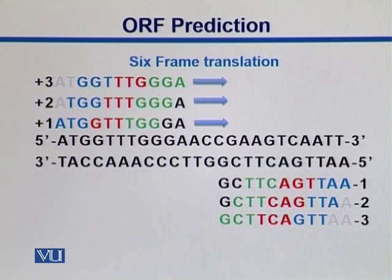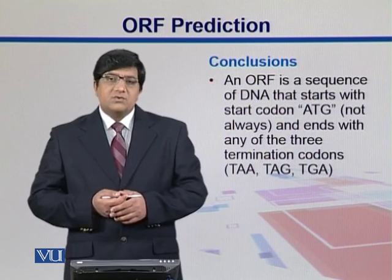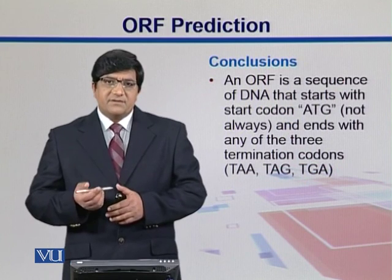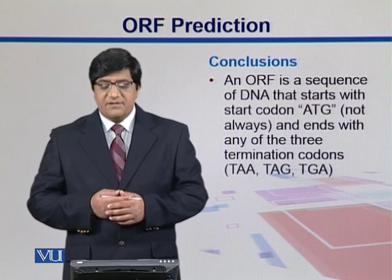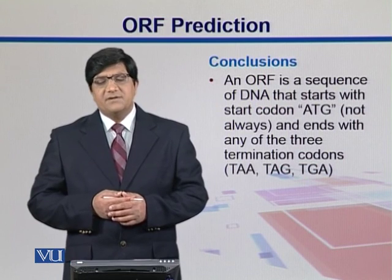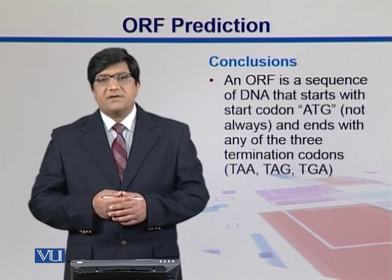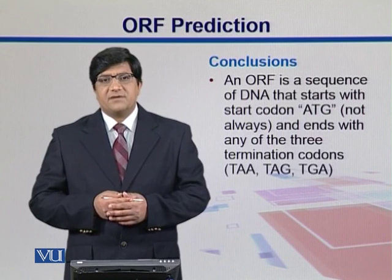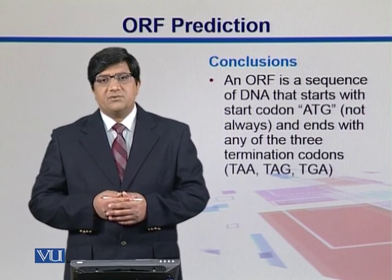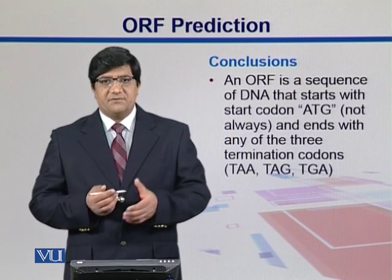So we try to get those ORFs in all six frames, which is what we will observe in the gene finder as well. To summarize: an ORF is a sequence of DNA that starts with ATG and ends with any of the stop codons. There are six reading registers as far as finding ORFs from a sequence is concerned.